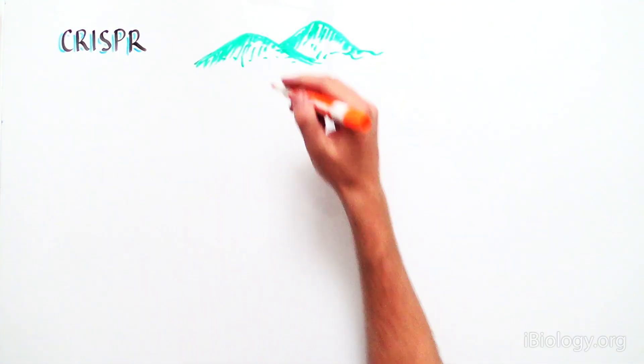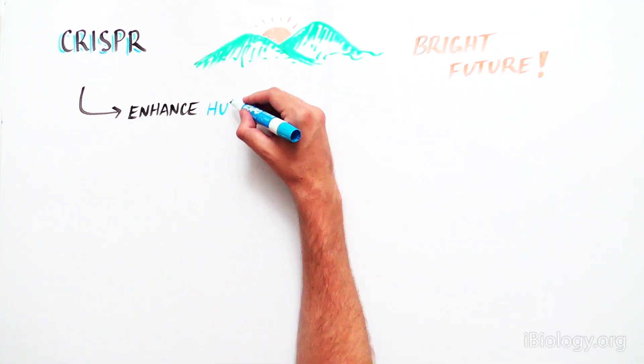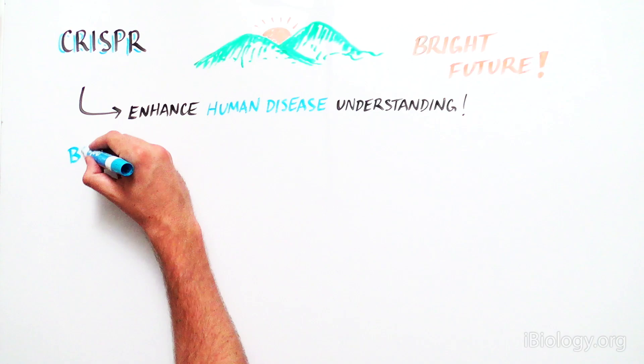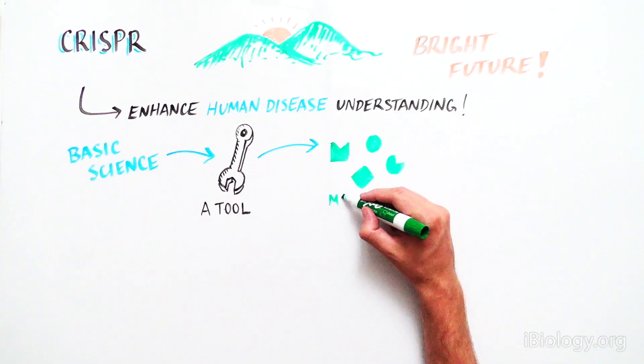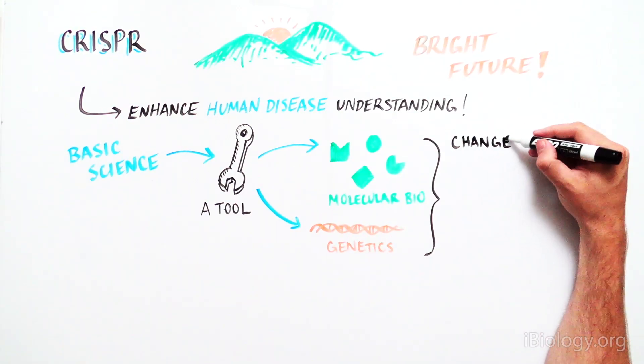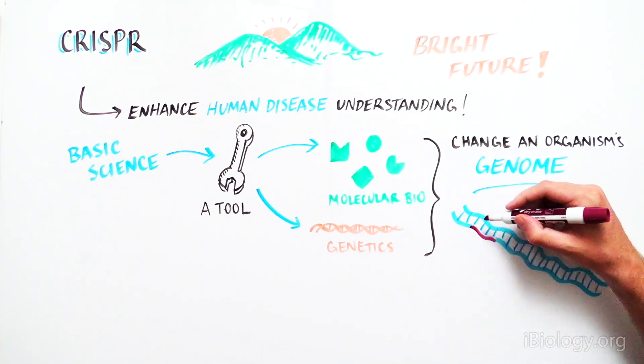CRISPR has a bright future ahead to advance our understanding of human disease by creating a new tool from basic research that is now widely used in the fields of molecular biology and genetics to change the genomes of any organism.